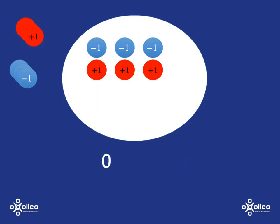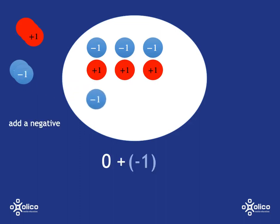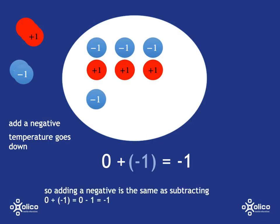Back to our zero situation. If we add in a cold disk — add in a negative — will our temperature go up or down? If we throw in a cold disk, obviously the temperature is going to go down. So from zero, we're going to go down to negative one. Adding in a negative, adding in a cold disk, is going to be the same as subtracting, going down.